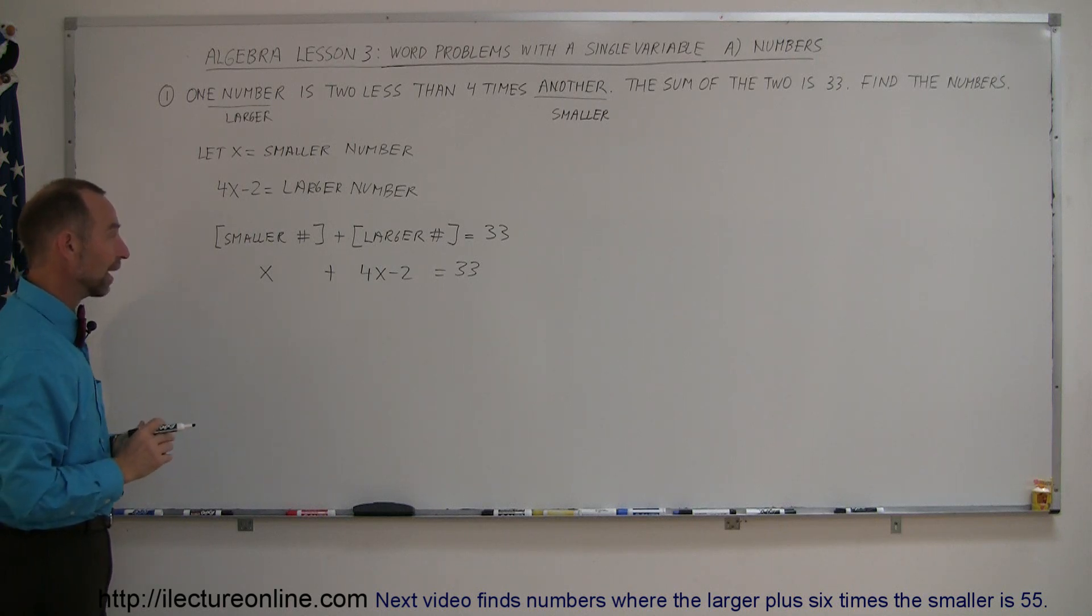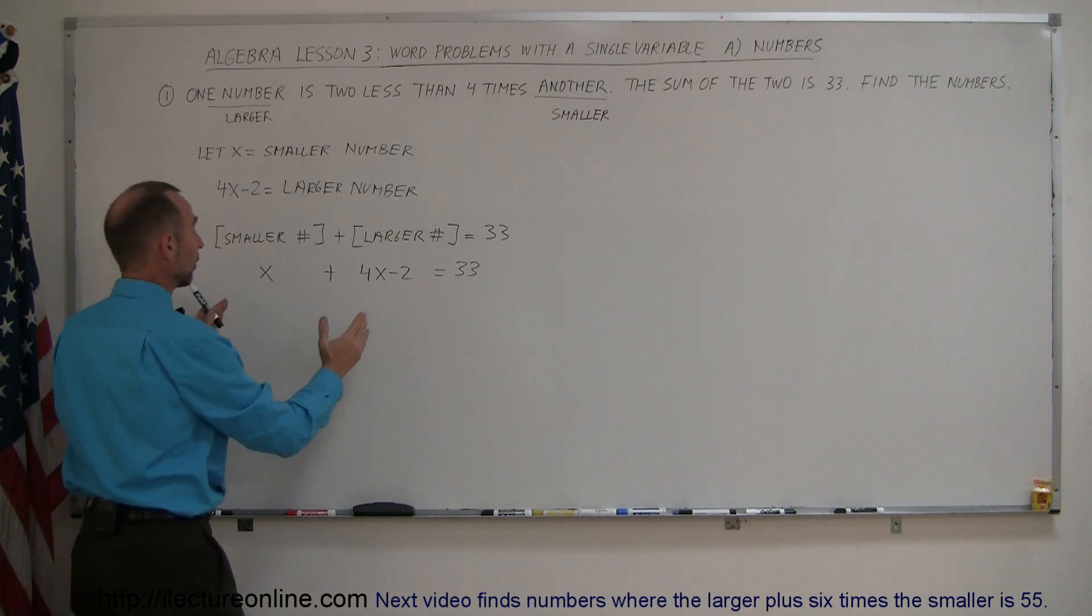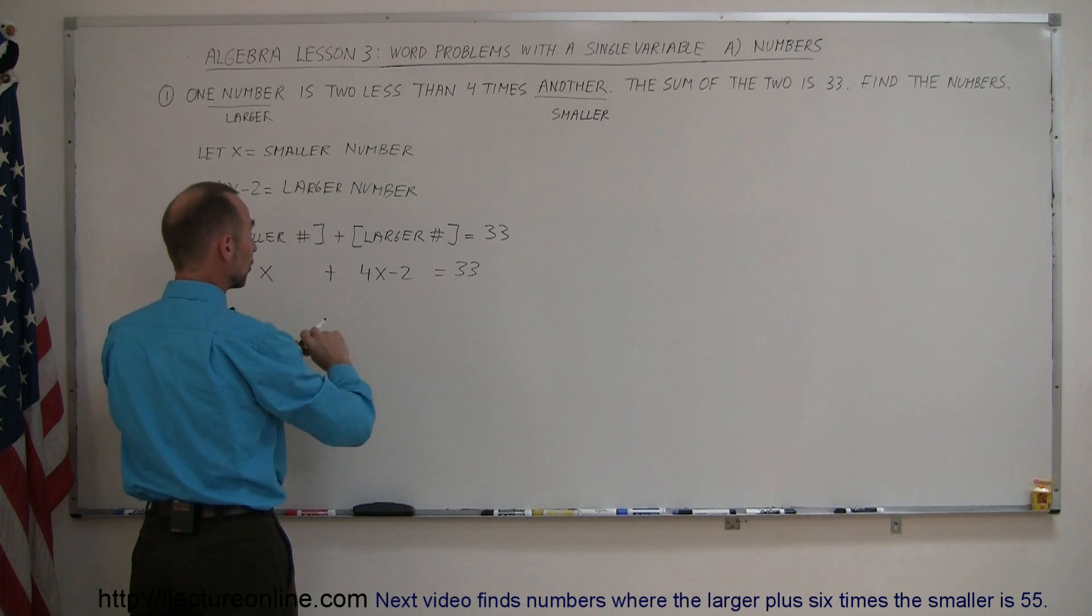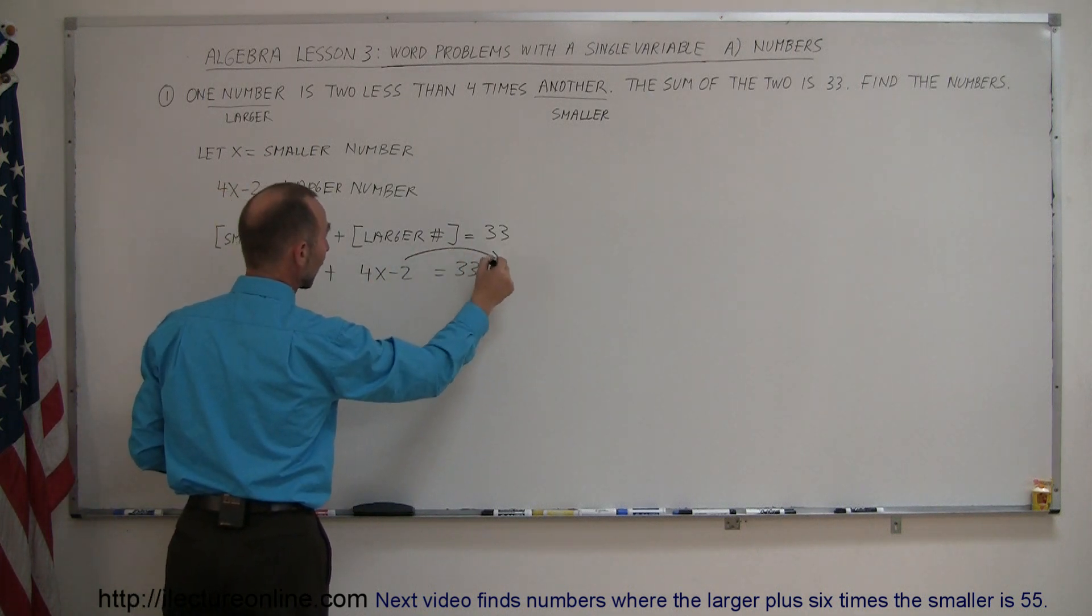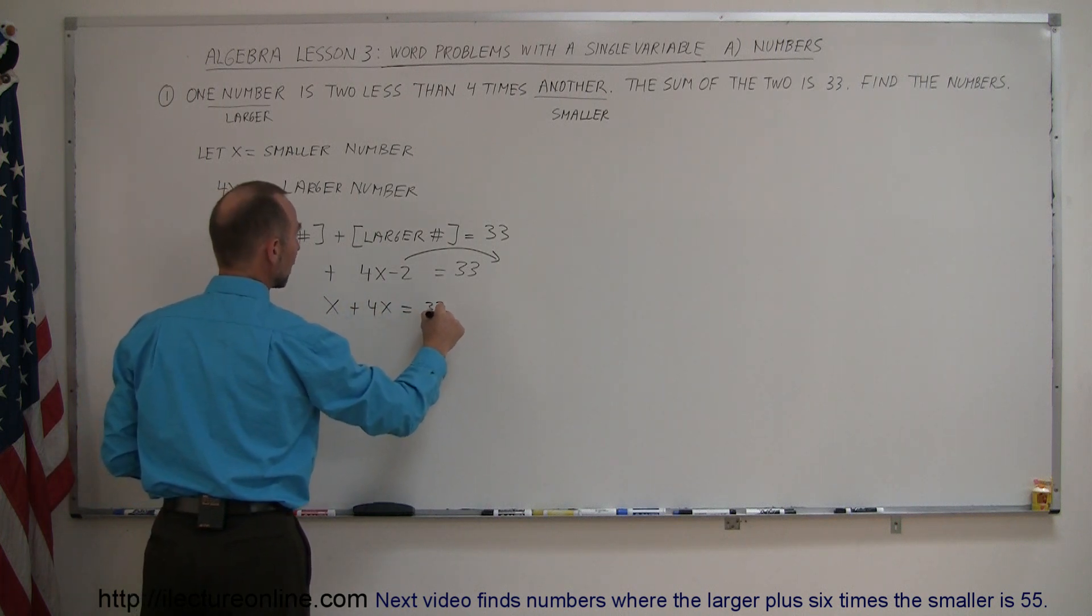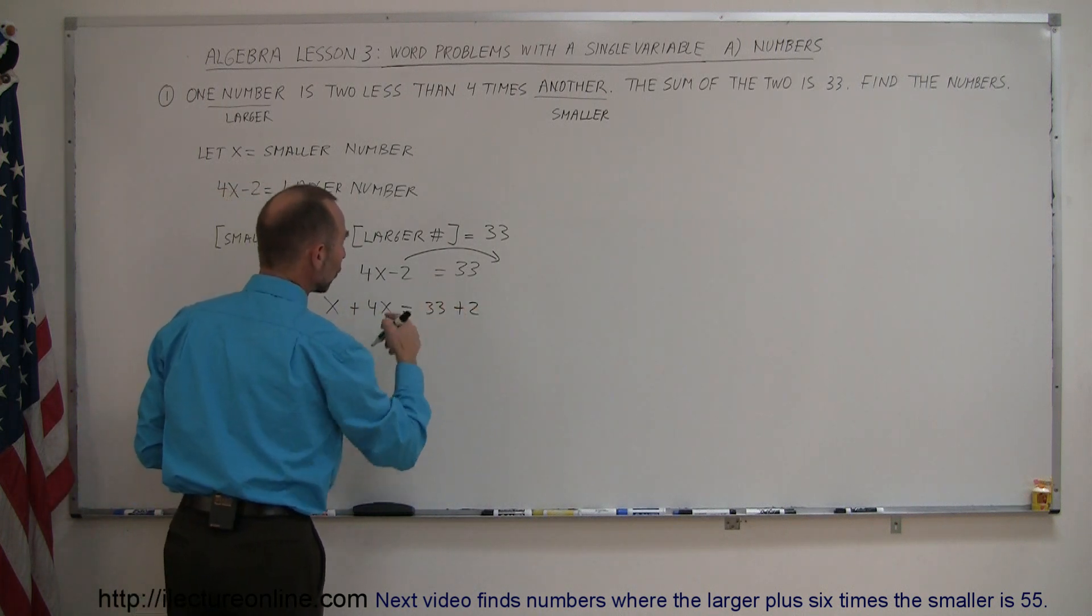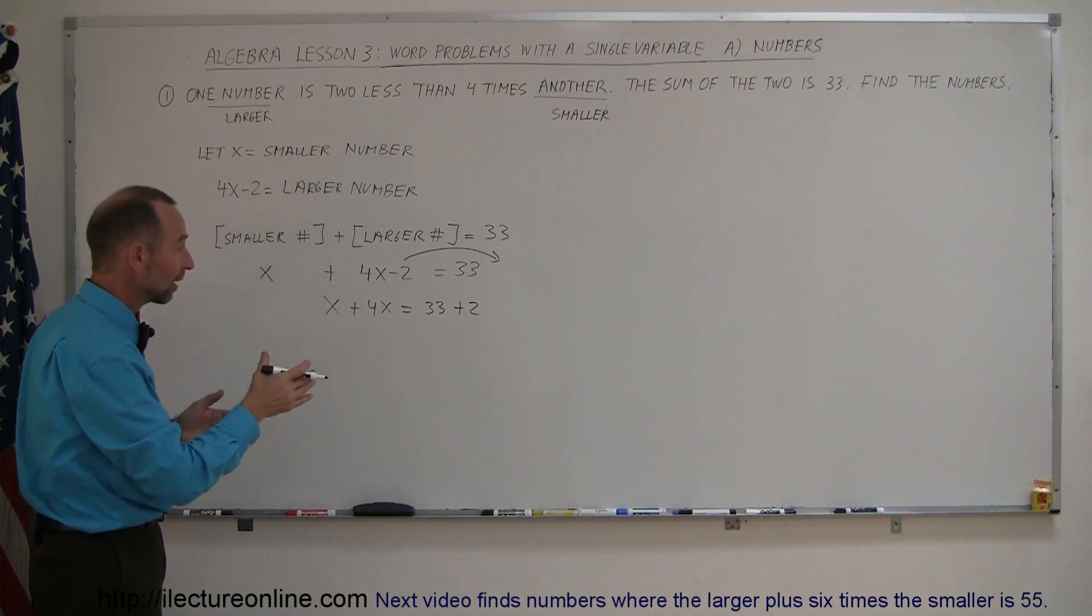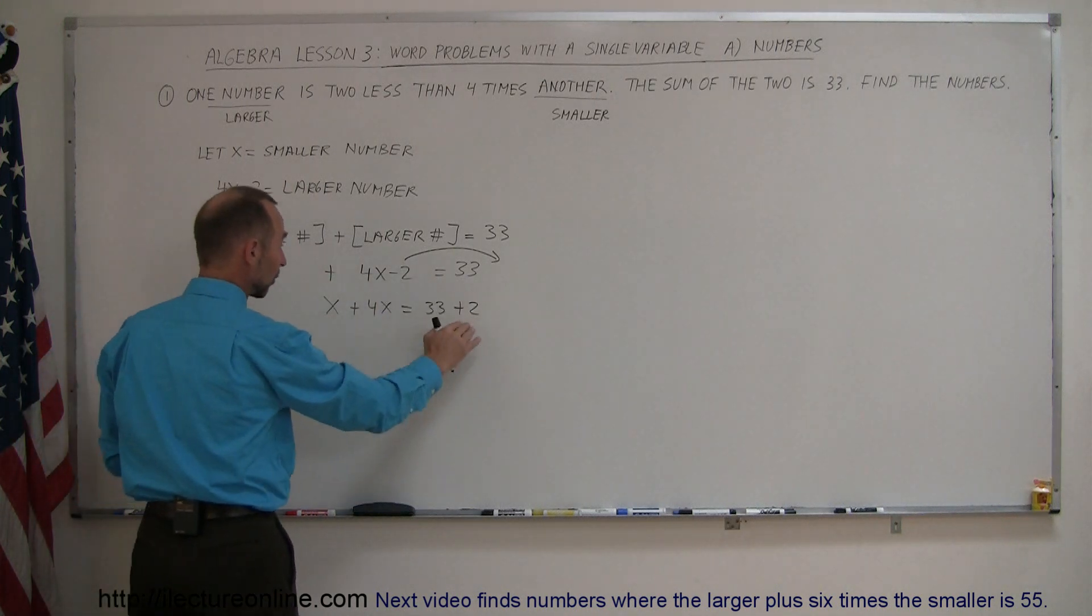All right, so solving this for x, the rule is keep all the x's on the left side of the equation, move all the numbers without the x to the right side. So this becomes x plus 4x on the left side equals 33. Now this becomes plus two. Whenever you move a number to the other side, the sign changes, so the minus two becomes a plus two.